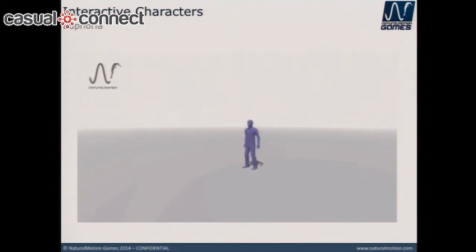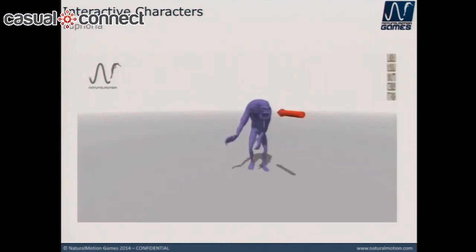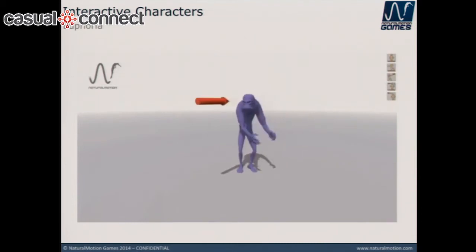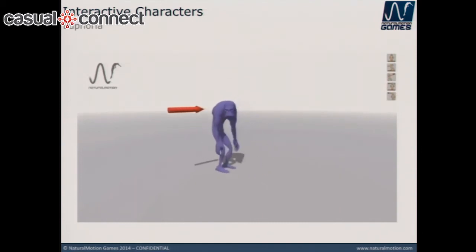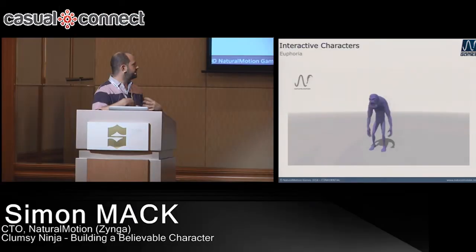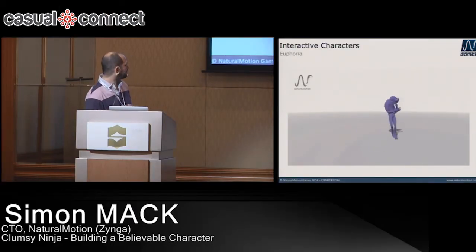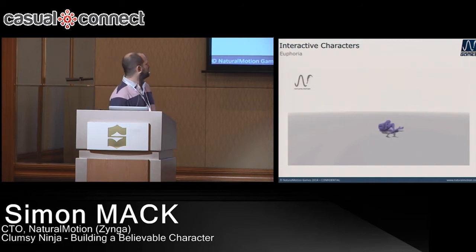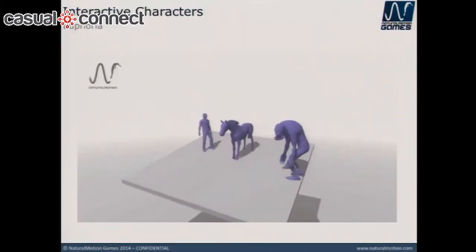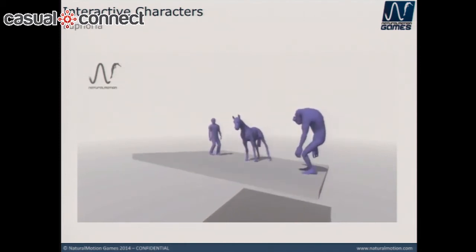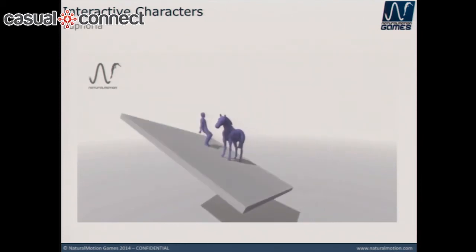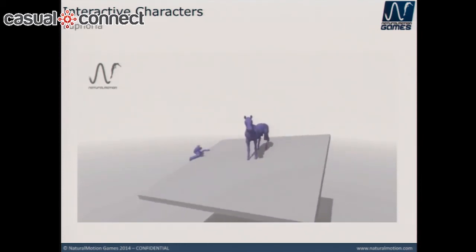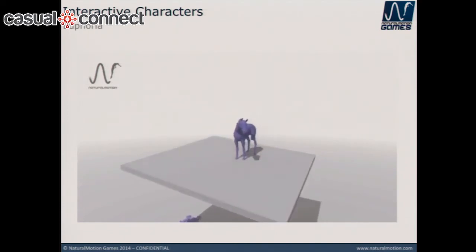That blends into an animation for standing up. The great thing about the technology is we can take the same behaviors, the same controllers, and apply them to very different characters. They perform the same basic actions but their motion will be different because of their different mass distribution. Different characters are able to balance more or less effectively depending on their mass distribution and how many legs they've got.